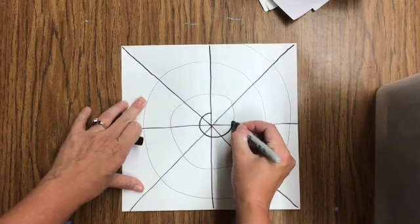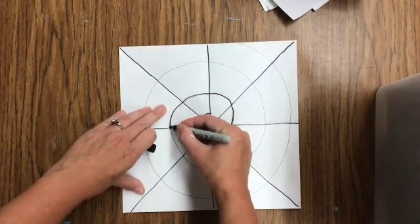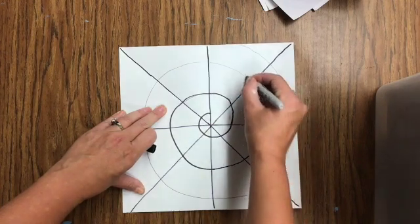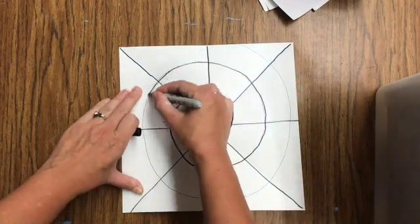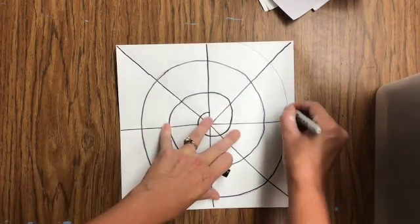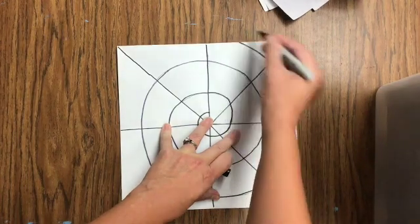Once you've traced your spiral around, if there's any pencil marks that are showing, you can take an eraser and you can erase those pencil marks. It won't mess up the Sharpie, but it'll make your artwork look nicer and cleaner. So if you miss the pencil line, just go back and erase it when you're finished.